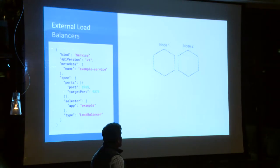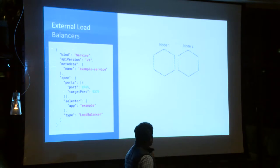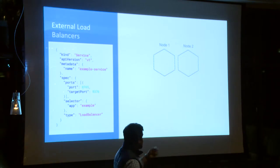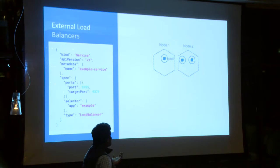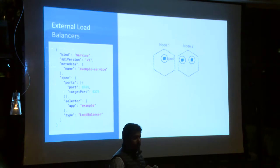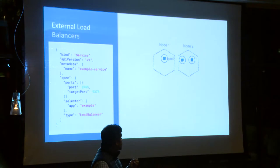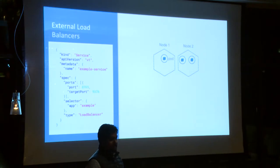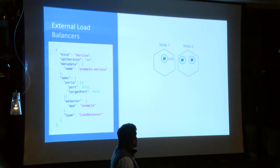Let's start with a couple of nodes in your deployment and schedule some pods on them. You can schedule some pods on it. The next thing you would do in Kubernetes is create a Kubernetes service. A Kubernetes service is a logical entity which redirects traffic to specific pods matching a specific label.